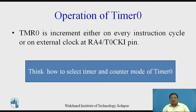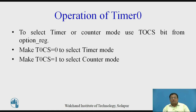Regarding the operation of Timer 0: Timer 0 increments either on every instruction cycle or on an external clock at pin RA4/T0CKI. To select timer mode or counter mode, use the T0CS bit from the option register. To select timer mode, make T0CS = 0. When the T0CS bit is set to 1, it selects counter mode, meaning the timer operates on either the rising edge or falling edge of the external clock.